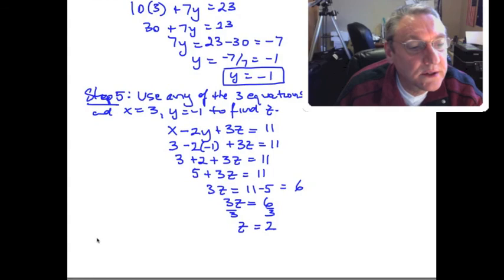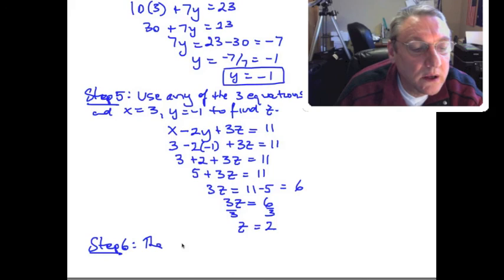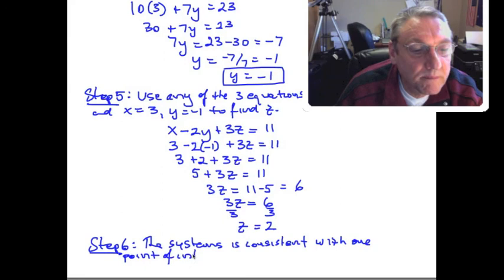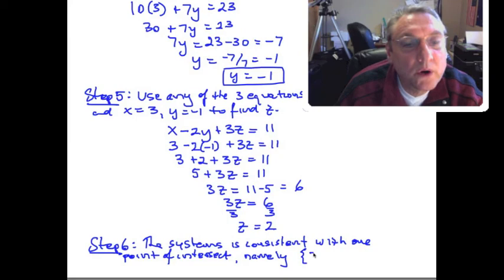Step six: the system of equations is consistent with one point of intersection, namely the ordered triplet (3, -1, 2).